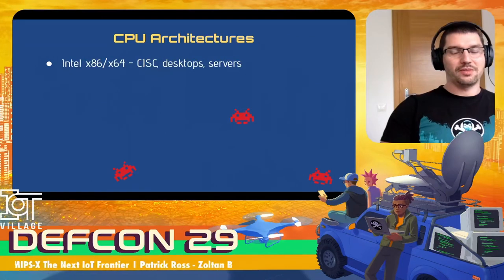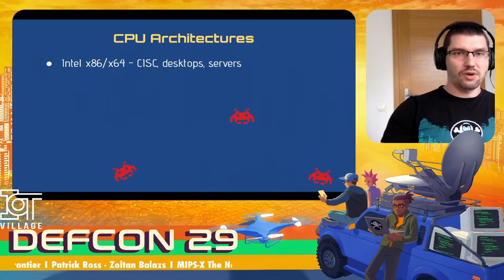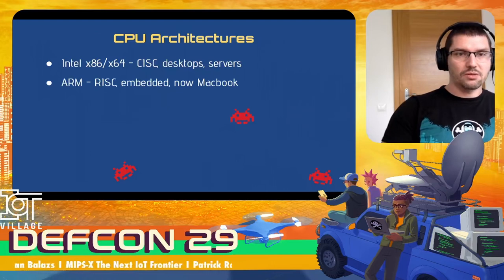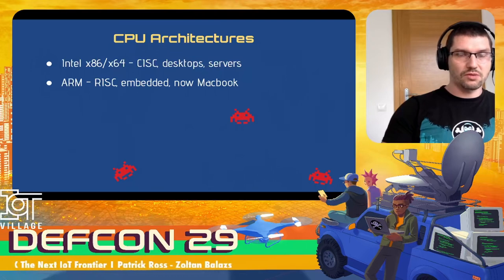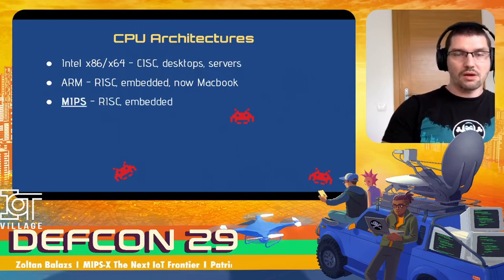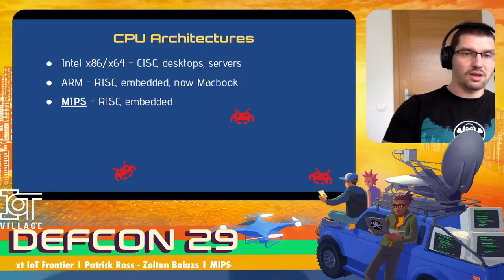As you know, there are many different CPU architectures out there in the world. The most common one is Intel, which is a complex instruction set based CPU, mostly used in desktops and servers. The second most common one is the ARM CPU architecture, which is based on RISC — reduced instruction set. You can mostly find it in embedded devices, for example smartphones, and now also in MacBooks. Our talk will deal with MIPS. It's also a reduced instruction set; you can find it in embedded devices, mostly in cheap Chinese IP cameras.